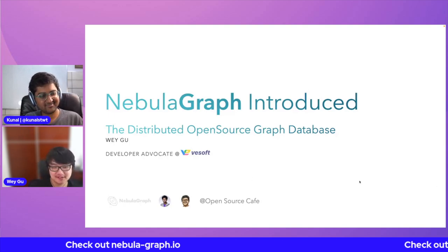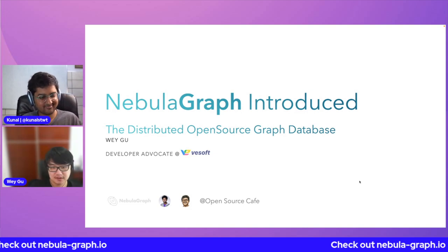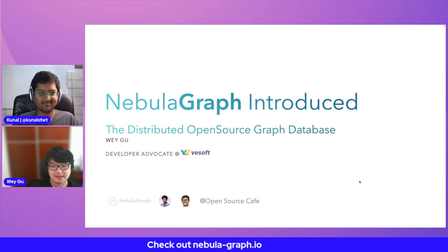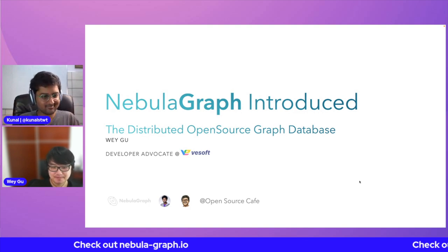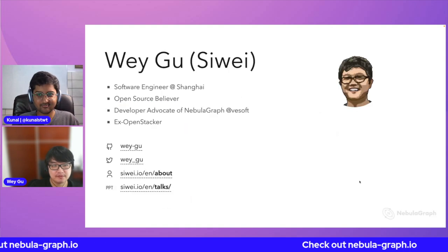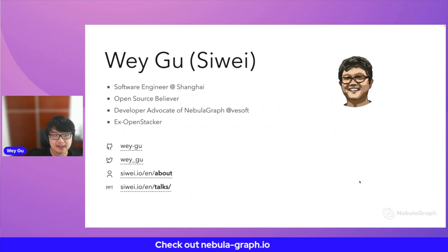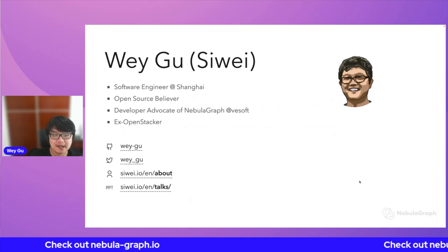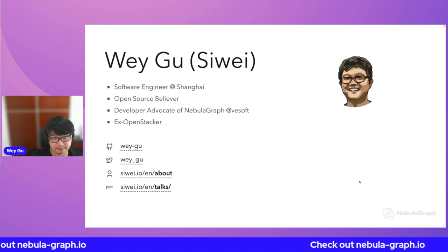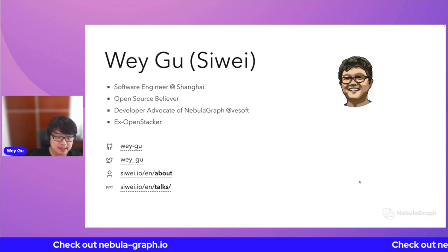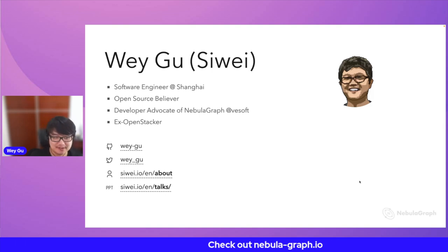Thank you so much. My pleasure to have this opportunity to share something around the graph — the graph magic, Nebula Graph. I'll give a brief introduction from my side. I'm Wei from Shanghai and I'm an open source believer. I like to code around different open source communities. I'm now the developer advocate for Nebula Graph. The team behind is called VESoft, and you will know why we call it VESoft later.